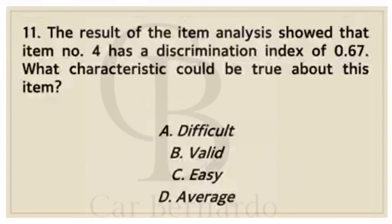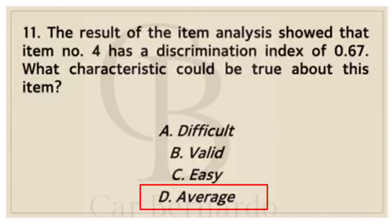Number eleven: The result of the item analysis showed that item number 4 has a discrimination index of 0.67. What characteristic could be true about this item? Letter A: Difficult. Letter B: Valid. Letter C: Easy. Letter D: Average. Answer: Letter D, Average.